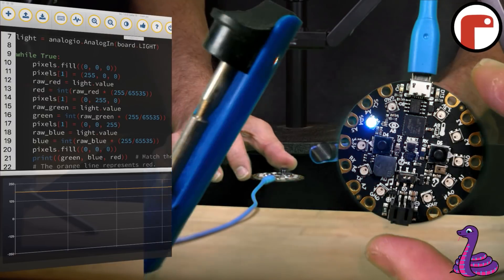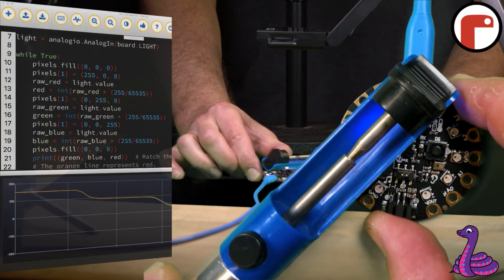We can try this again with a blue object, and the plotter will show us the expected results.